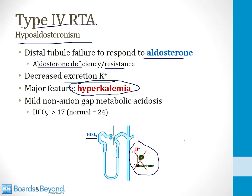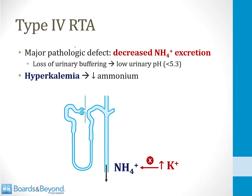In addition, aldosterone promotes the secretion of acid in the distal nephron. So when aldosterone activity is deficient, there will be a mild non-anion gap metabolic acidosis — usually the bicarb is greater than 17 (normal is 24). You don't get those very low bicarbs like less than 10 that we talked about for a distal RTA. The major pathologic defect in the nephron in a type 4 RTA is decreased ammonium excretion, and it's super high yield to know this for Step 1.